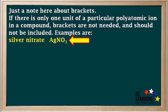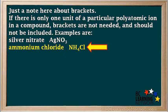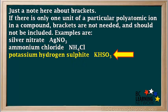Some examples of compounds without brackets: silver nitrate, AgNO3, has one nitrate ion, so no brackets. Ammonium chloride, NH4Cl, has one ammonium ion, so no brackets. And potassium hydrogen sulfate, KHSO3, has one hydrogen sulfate ion, so no brackets around it.